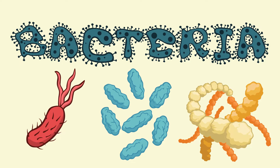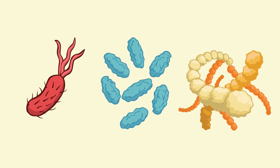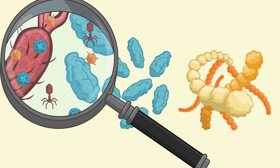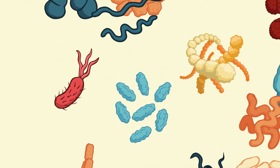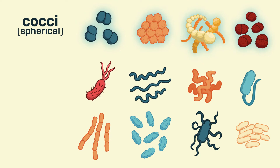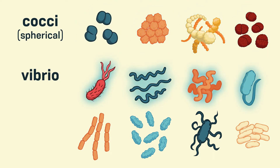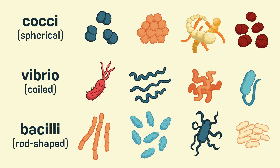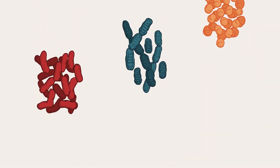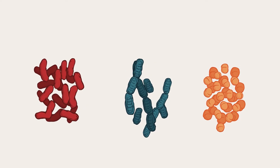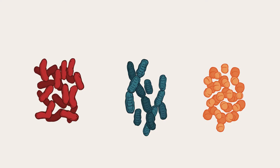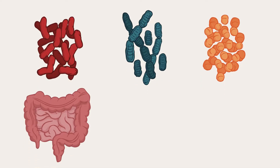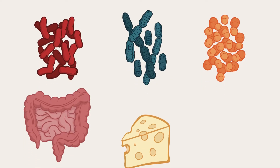Next, let's examine bacteria. Bacteria are living, single-celled microorganisms, which are much larger than viruses. Bacteria occur in three main shapes: cocci, which means spherical; vibrio, which means coiled; and bacilli, which means rod-shaped. One important thing to remember about bacteria is that not all bacteria are pathogenic — not all types of bacteria make us sick. In fact, there are many species of bacteria that are beneficial to humans, like the ones that live in our digestive tract and the ones present in food products like cheese and yogurt.